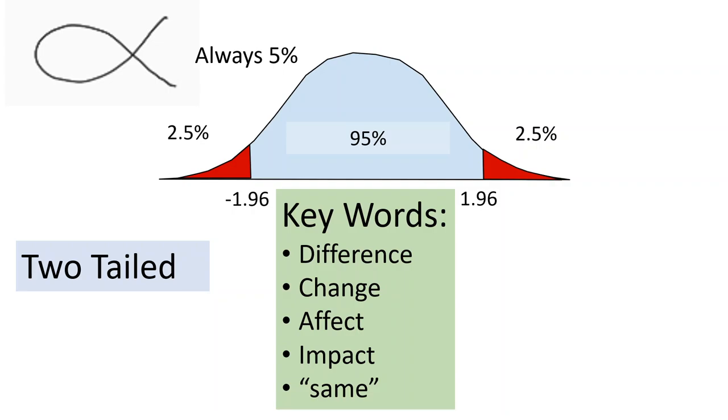So notice these are all words that imply something's going to happen, but we don't really necessarily know what direction it would be. So if there's going to be a difference in score, perhaps the difference would be on the upper end or the difference could be on the lower end. Does it change your score?